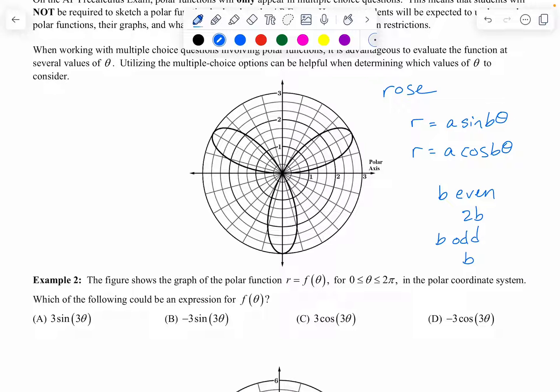So it could be something like A sine B theta, or A cosine B theta. So when B is even, it has 2B number of petals. Okay. When B is odd, it has B number of petals. So what that tells us is if I see a picture that has four petals, then this tells me that the B value is actually equal to two. And notice right here, when I have a point at theta equals zero, this tells me it's going to be cosine.